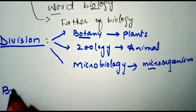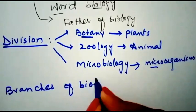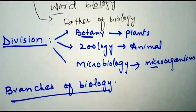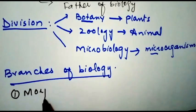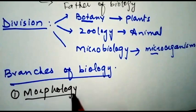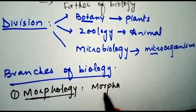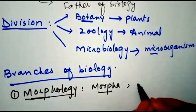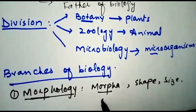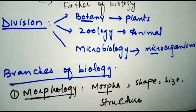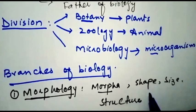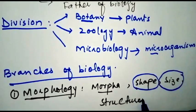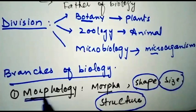Now we discuss the branches of biology. The first branch is morphology. Morphology deals with the external structure of living organisms. The study of the external structure of organisms is called morphology.